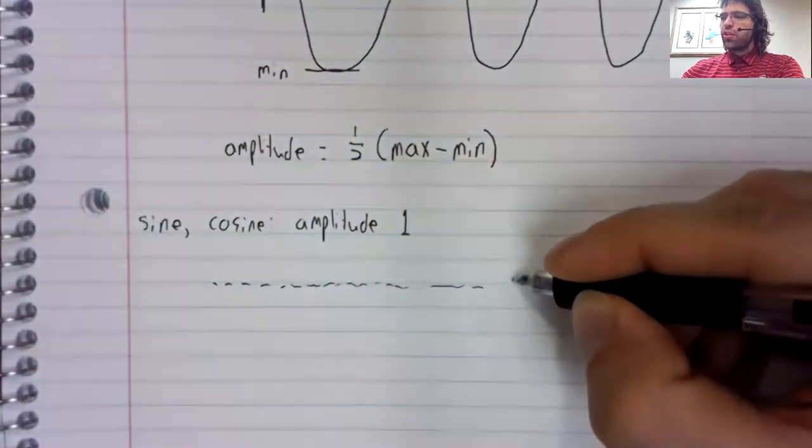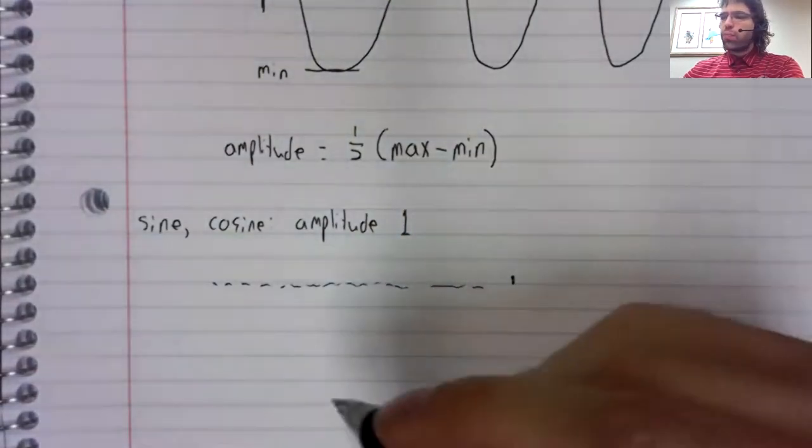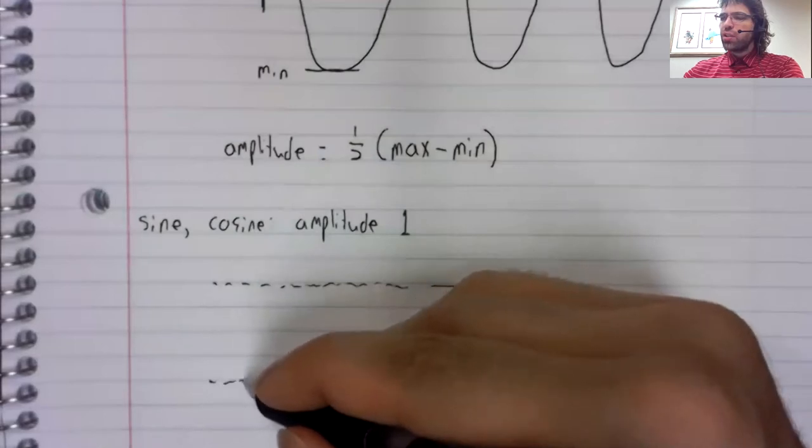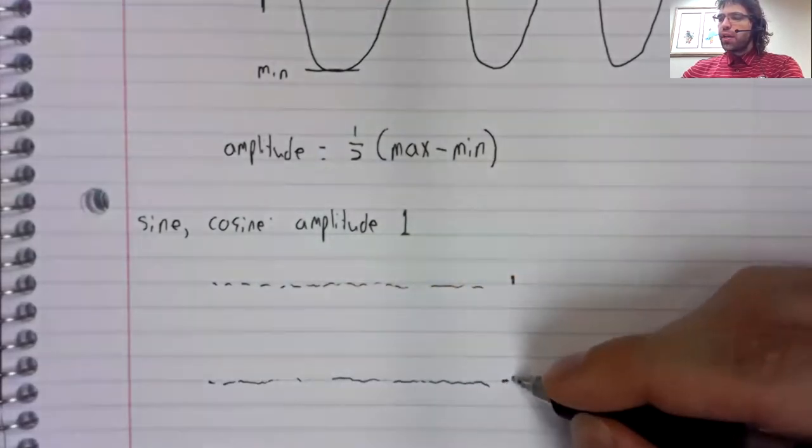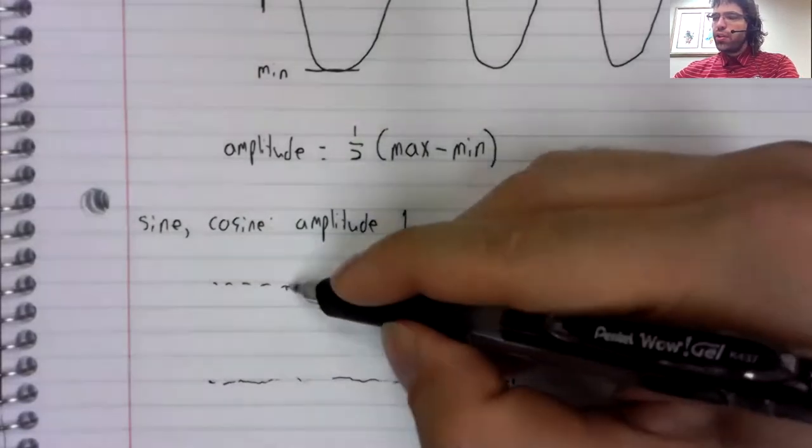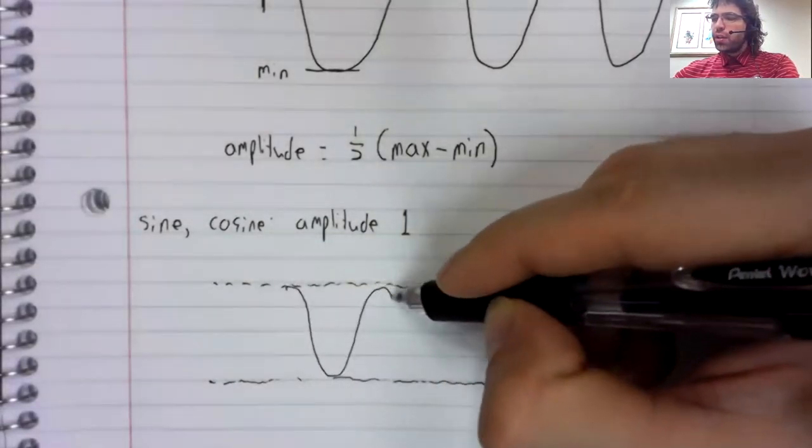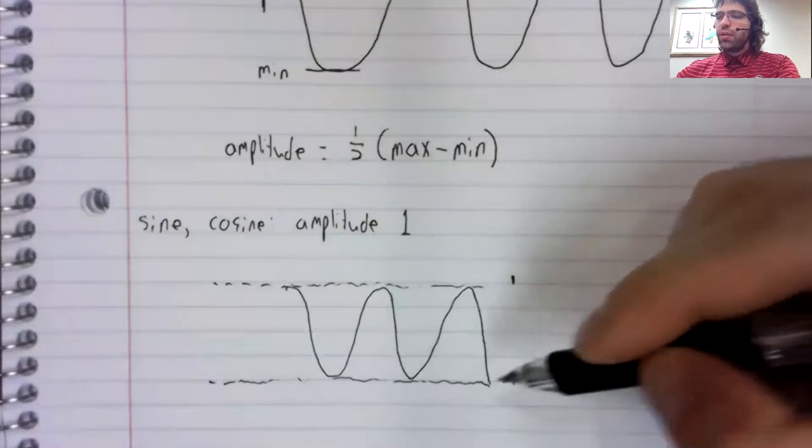The sine and the cosine both have one as a maximum and negative one as a minimum.